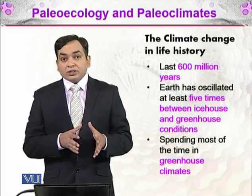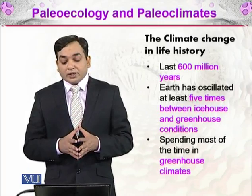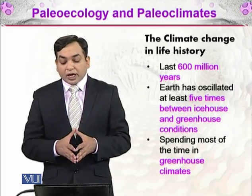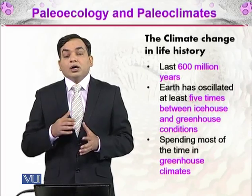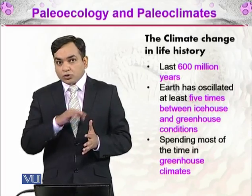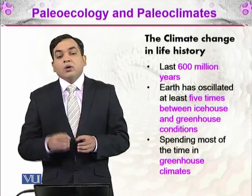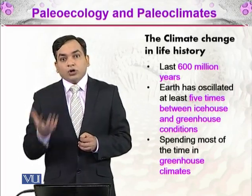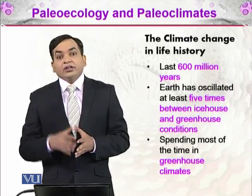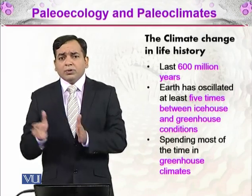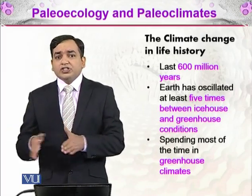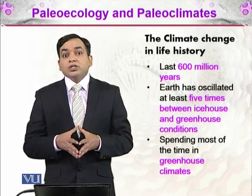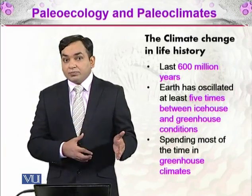During the last 600 million years, this oscillation has happened five times. Earth has spent most of its time in greenhouse climate — most of that time was hot, with temperatures increasing. There were only some short windows of ice ages, and the last ice age was more than 10,000 years ago.